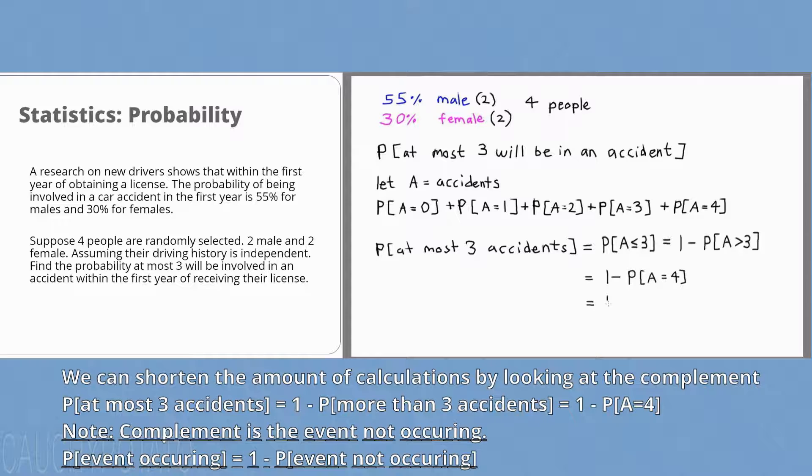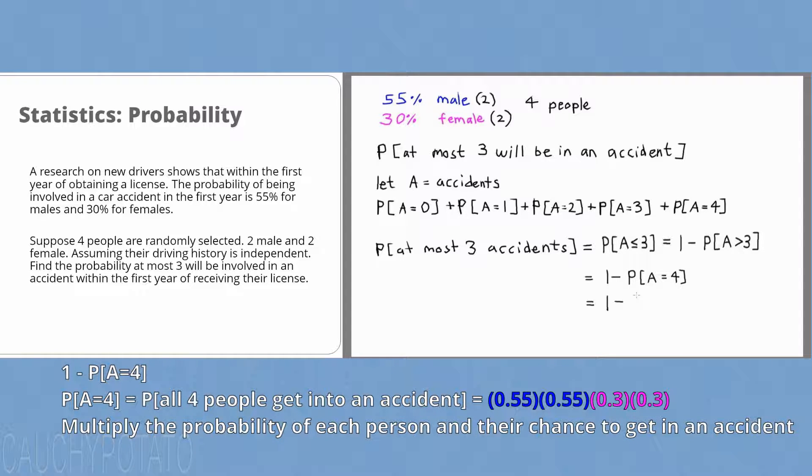This equals one minus probability all four people get into an accident. So the first male gets into an accident and we know it happens 55% of the time. So 0.55 times the second male also gets into an accident, 0.55